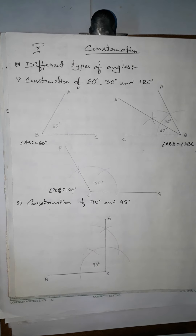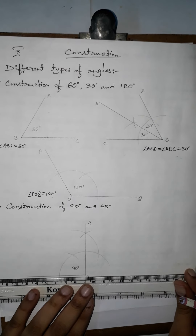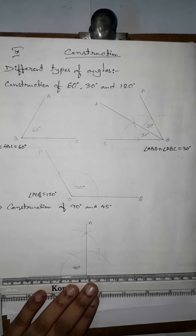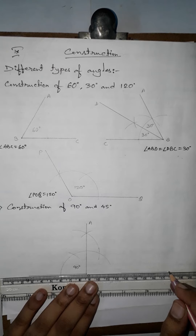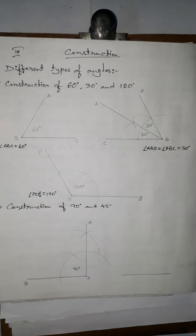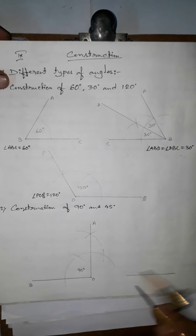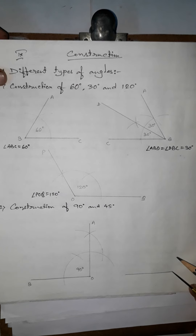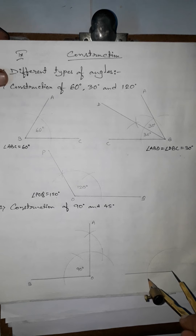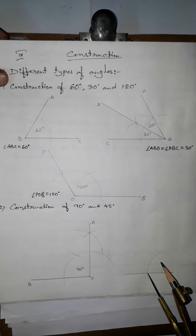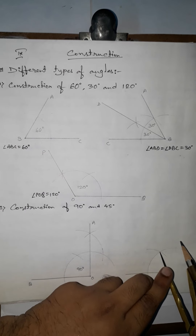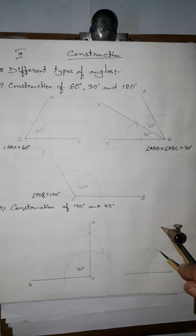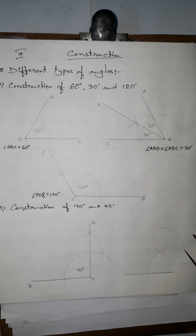Now let's draw the 45-degree angle. Since 45 is half of 90, we bisect the 90-degree angle to get 45 degrees. We draw a base, then use the same construction: any radius arc gives 60 degrees, then from that we get 120 degrees, and the midpoint of those two arcs gives us the 90-degree line.